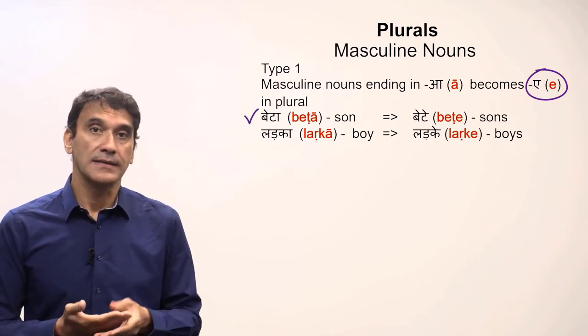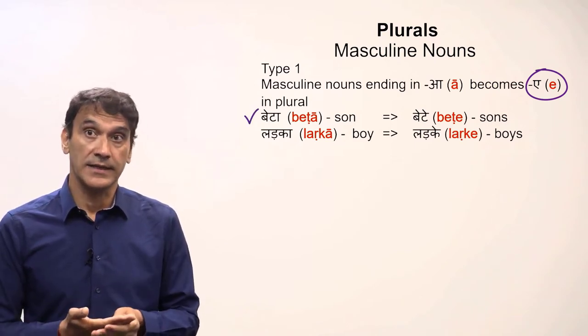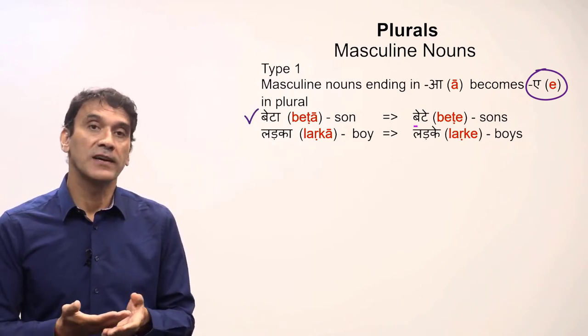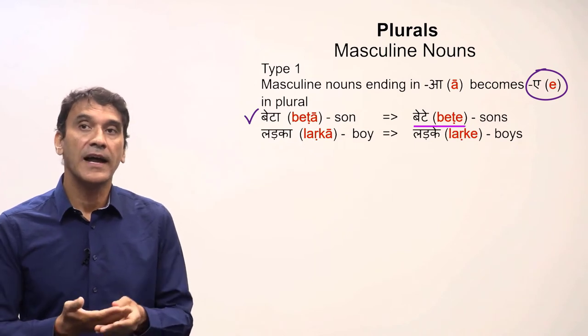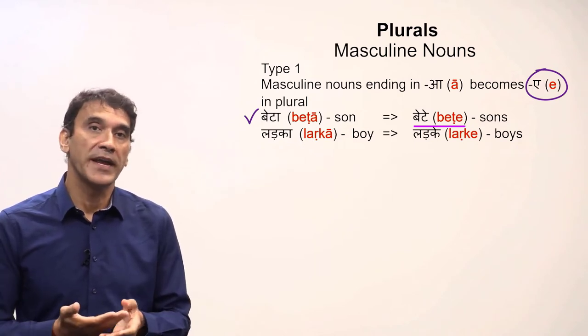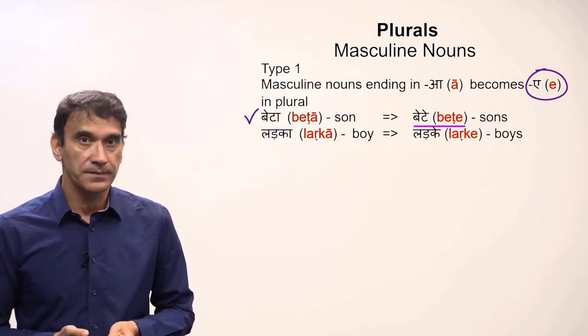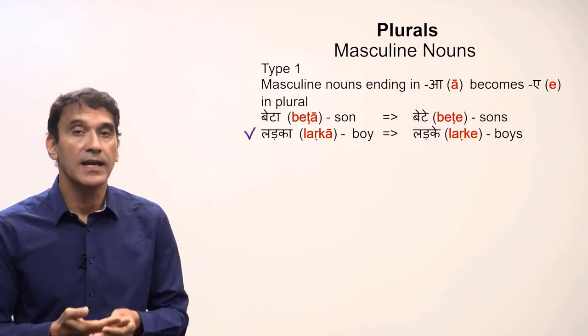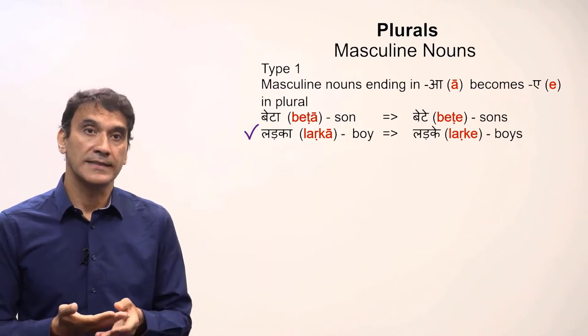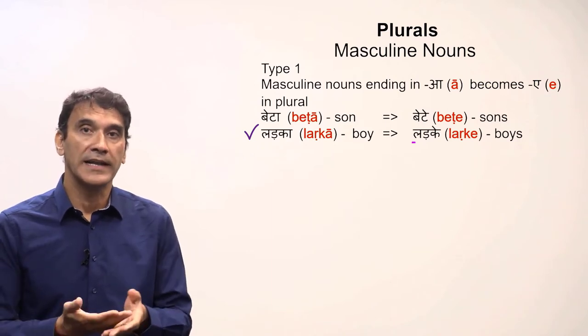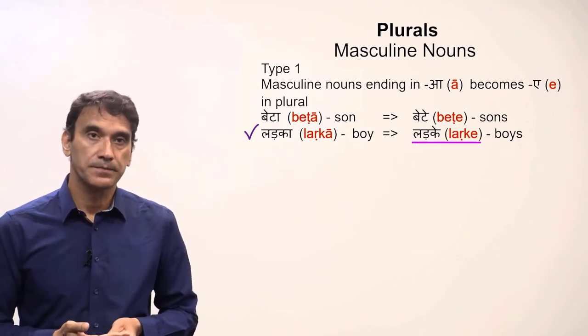For example, 'beta' meaning 'son' is singular; the plural is 'bete' meaning 'sons' — the 'a' ending changes to 'e' in plural. Similarly, 'ladka' meaning 'a boy' is singular, and 'ladke' meaning 'boys' is the plural form.